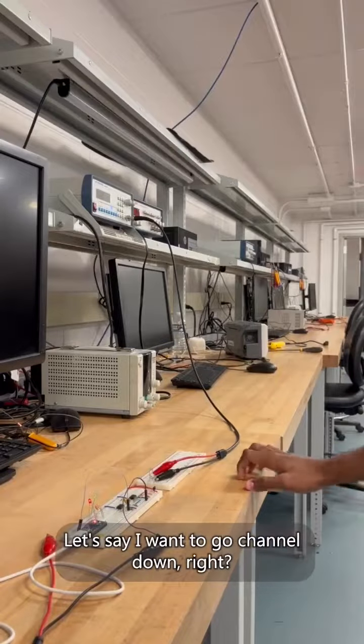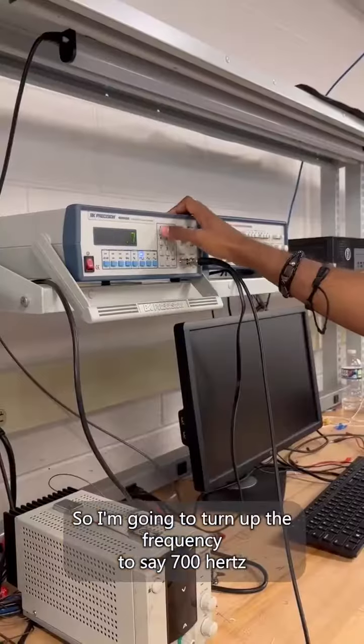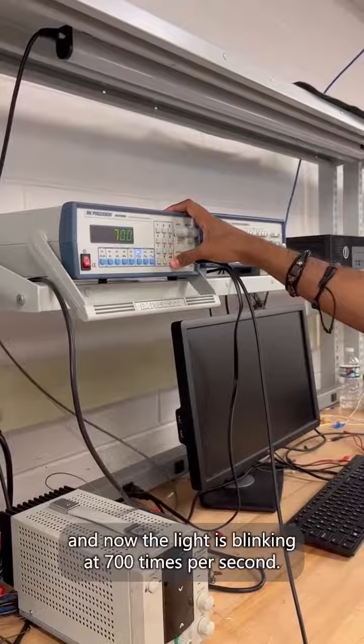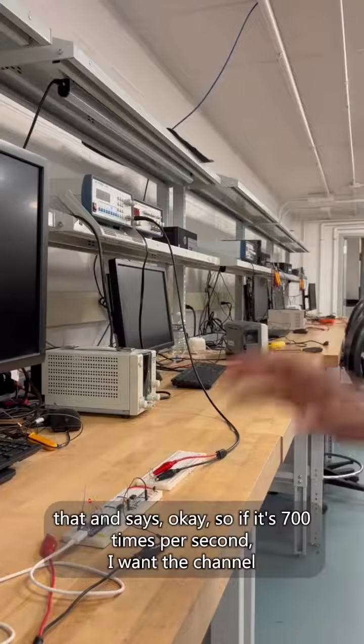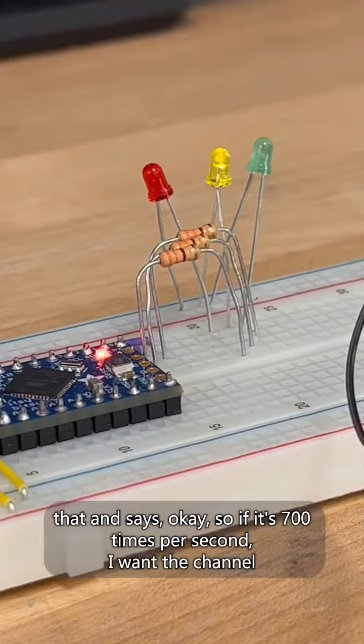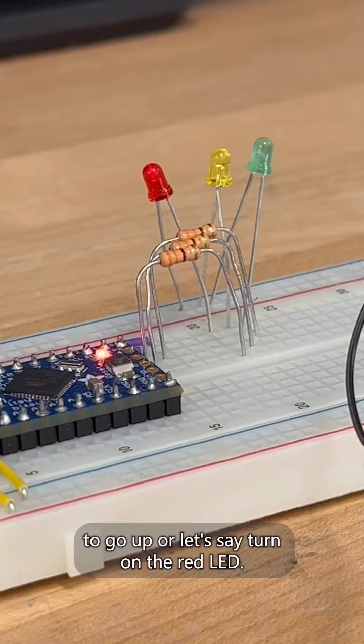Let's say I want to go channel down. I'm going to turn up the frequency to 700 hertz and now the light is blinking at 700 times per second. So the detector circuit detects that and says if it's 700 times per second, I want the channel to go, or turn on the red LED.